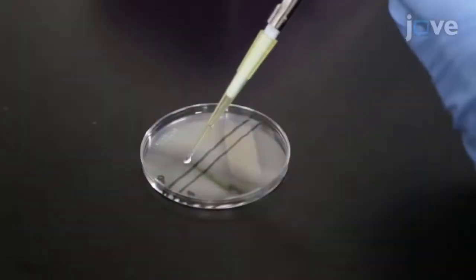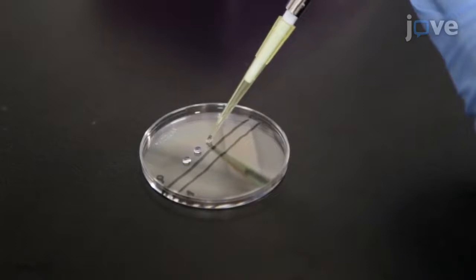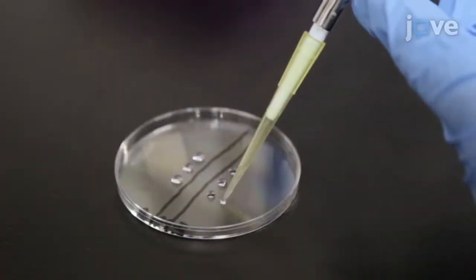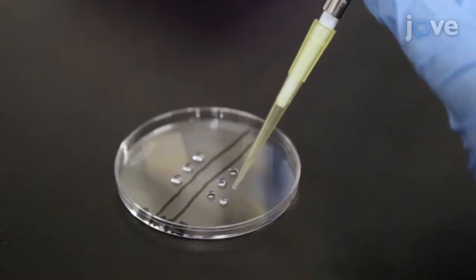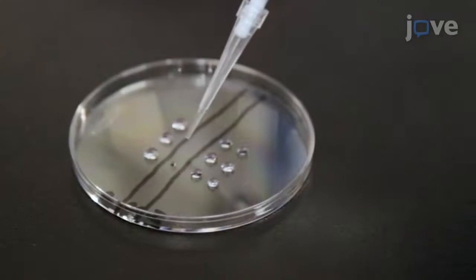In a 60-millimeter dish, place 2 to 3 drops each of PVP-HTF, 5 to 6 drops of HEPES-buffered CZB, and EGFP-H2B mRNA.